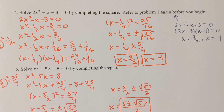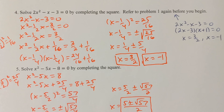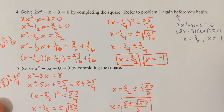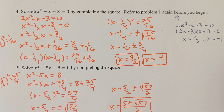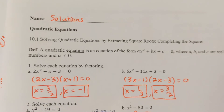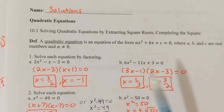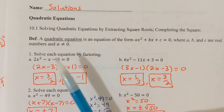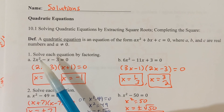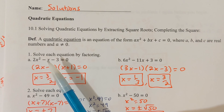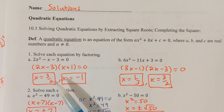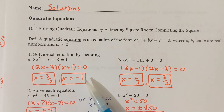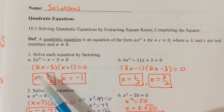Let's look at some examples of completing the square. In the very first example on this worksheet, we were solving an equation by factoring: 2x² - x - 3 = 0, and x = 3/2 and x = -1. That factored very nicely for us.